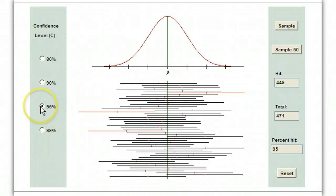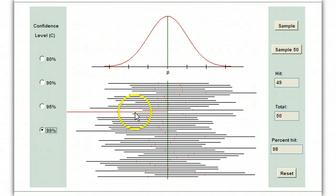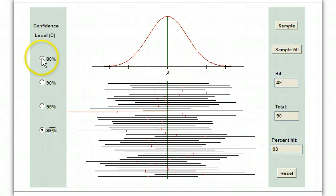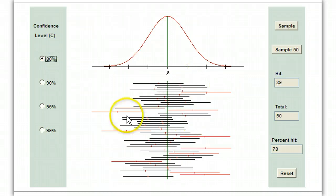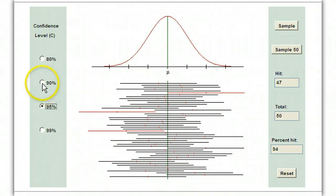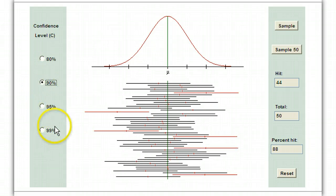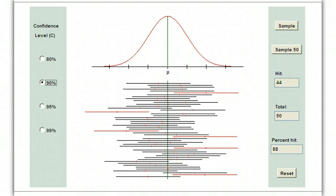Now watch what happens when I increase this from a 95% interval to a 99% interval — watch what the width of the interval does. It got wider, and as it got wider, this percent went up. If I go down to 80%, they shrink down a lot and we miss a whole lot more. So if we want to increase our confidence level, we have to increase the width of the interval. A confidence interval is just guessing — trying to guess what the population mean or population proportion is — but using a sample mean or sample proportion to come up with that guess.